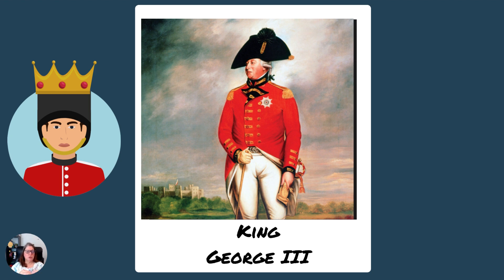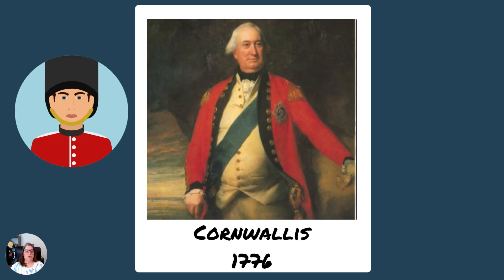King George is there throughout, and he's also going to be there at the end of the war. We have Lord Cornwallis, who is the leader of the British Army. He's going to have many people under him, and he's going to be present at the surrender — the key figure throughout the entire revolution for the British.